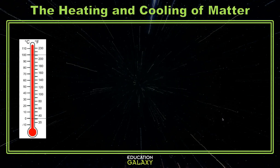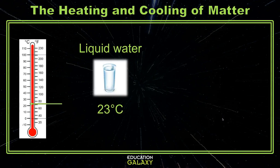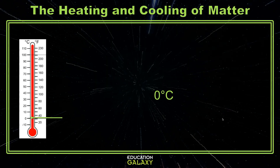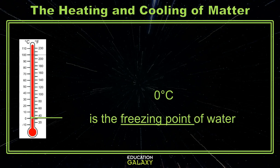Let's look at one last example. If you have liquid water and you want to change it into a solid or ice, you simply have to place it in the freezer or leave it for several hours. As the temperature of the water drops, it will start forming ice just as the temperature reaches zero degrees Celsius. Zero degrees Celsius is a doubly special number because in addition to being the melting point of water, it is also the freezing point of water.